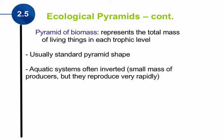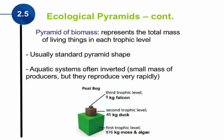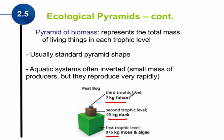A typical pyramid of biomass looks something like this. Here we are looking at a peat bog. Studying this peat bog, we can see that 976 kilograms of moss and algae support 45 kilograms of duck, which support 9 kilograms of falcon. The pyramid of biomass might come in handy if we're deciding to remove moss and algae from the peat bog — we can figure out how many kilograms of falcon that would eliminate. Each of these pyramids has a specific use depending on what we're trying to determine or describe within the ecosystem.